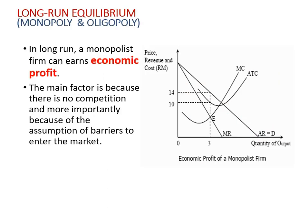In the long run, monopoly and oligopoly will earn economic profit. The main reason is no competition for monopoly, or less competition for oligopoly. Most importantly, due to the assumption of high barriers to entry for monopoly, and difficulty entering for oligopoly, these firms sustain economic profit with ATC remaining below AR.